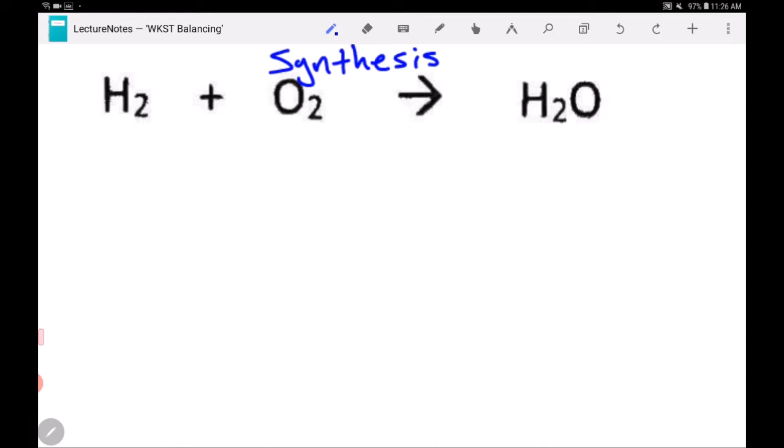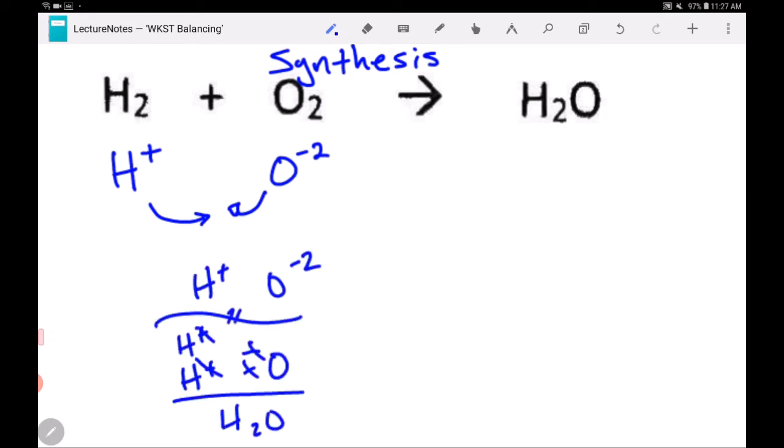If you look, what would these be if they were ions? Hydrogen, as an ion, has a plus one charge. Oxygen, as an ion, has a minus two charge. So for synthesis, these would get together. The H would get together with the O to make H2O. So we've taken the two separate ions and we've put them together into H2O.